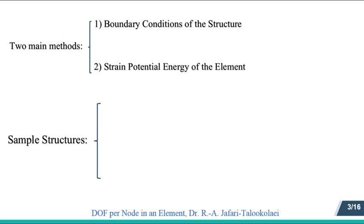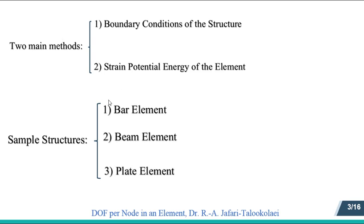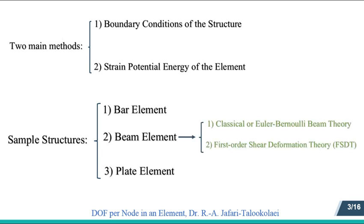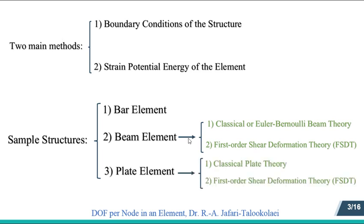To be clear, let me explain these two methods using specific and simple structures: the bar element, beam element, and plate element. For the beam element we will discuss the classical Euler-Bernoulli beam theory and first order shear deformation theory (FSDT), also known as Timoshenko beam theory. For the plate element, the classical Kirchhoff plate theory and also first order Mindlin-Reissner theory will be discussed. So in total we discuss about five elements, which will completely help you understand how to recognize the degrees of freedom per each node in an element.